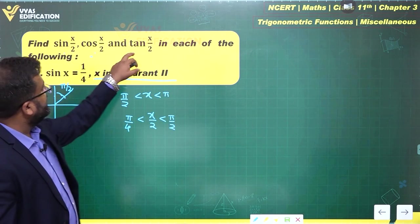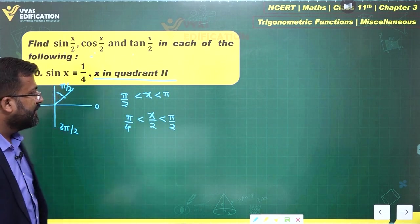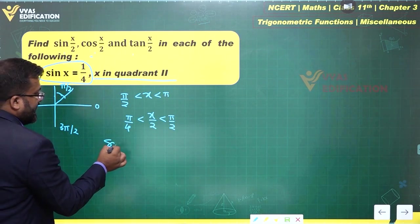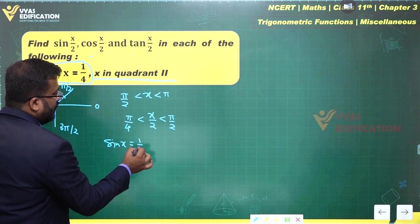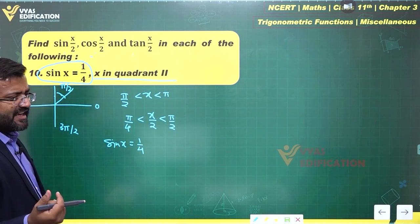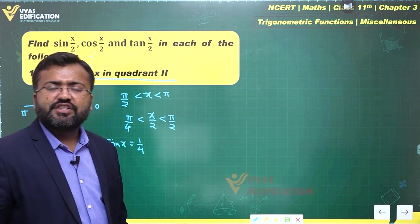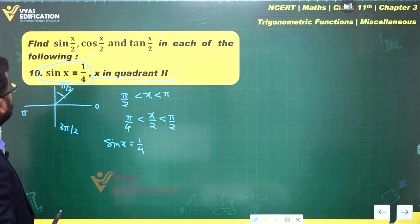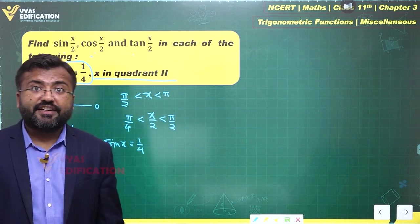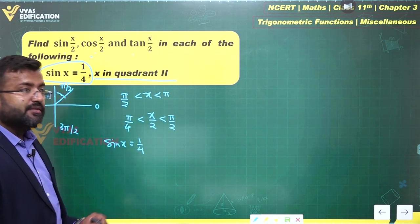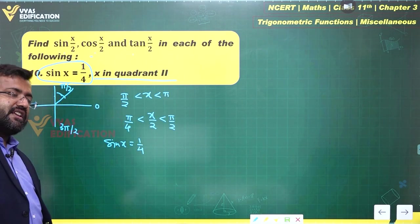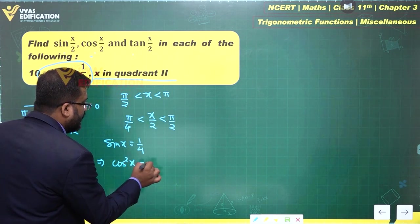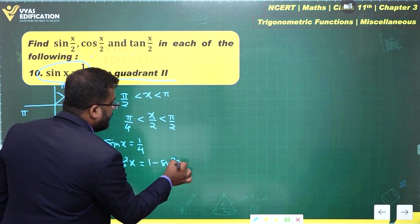Since x/2 lies in the first quadrant, all three values — sin(x/2), cos(x/2), and tan(x/2) — will be positive. Now, given sin(x) = 1/4, it's not straightforward to relate this directly, so let's first find cos(x) using the Pythagorean identity.